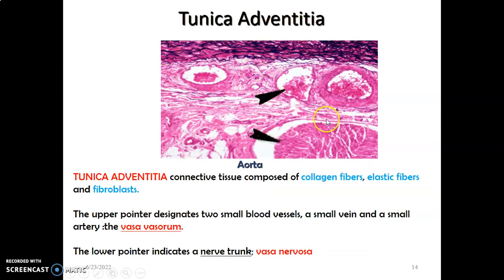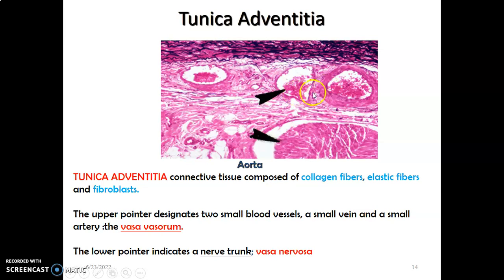Now at the tunica adventitia of this large artery, you can appreciate connective tissue fibers and fibroblasts, as well as neurovascular structures. This is a nerve; this is a vessel. You have connective tissue, collagen, elastic fibers, and fibroblasts. The upper pointer is showing the vessels — an artery and a vein. The artery has a thicker wall than the vein. These are the vasa vasorum, the blood vessels that supply the blood vessel. This lower pointer is showing a nerve trunk — this is the vasa nervosa.